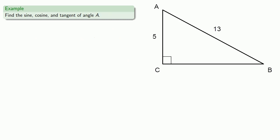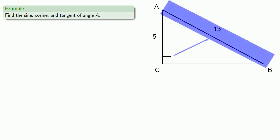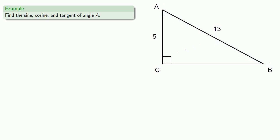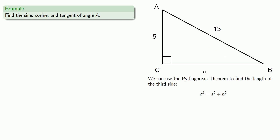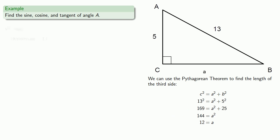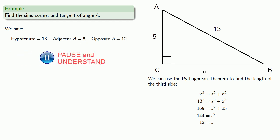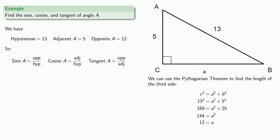We might have a triangle that looks like this, and we want to find the sine, cosine, and tangent of our angle. We need to find the length of the third side of the triangle. The hypotenuse c is always the side across from the right angle; little a is the side across from angle a, and little b is the side across from angle b. We use the Pythagorean theorem to find the length of the third side, and that tells us the hypotenuse is 13, the side adjacent to a has length 5, and the side opposite a has length 12. So we can find the sine, cosine, and tangent.